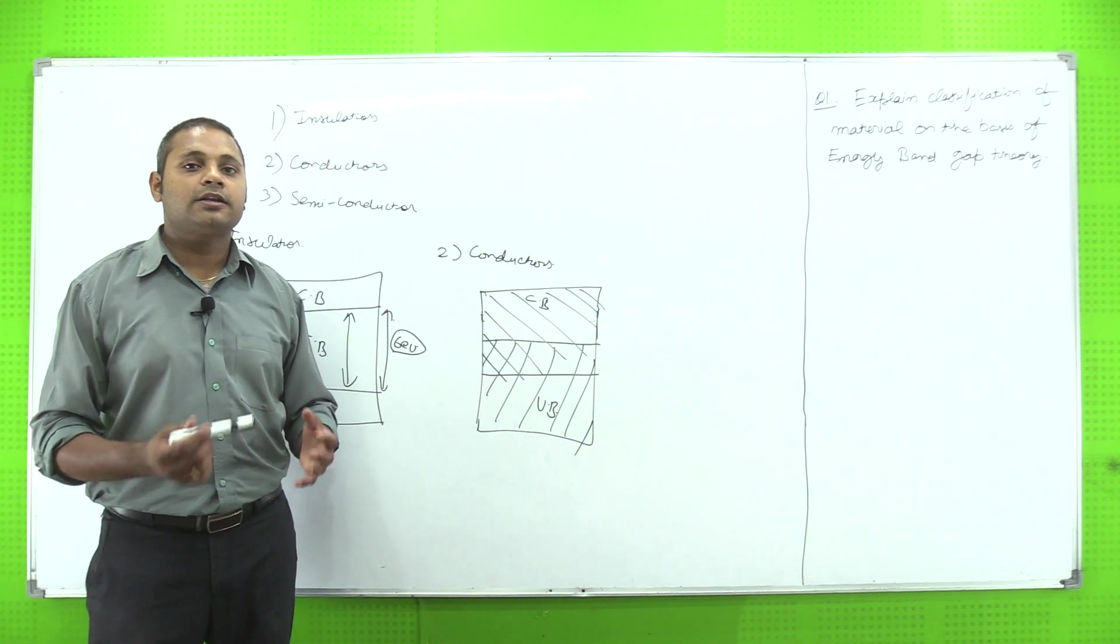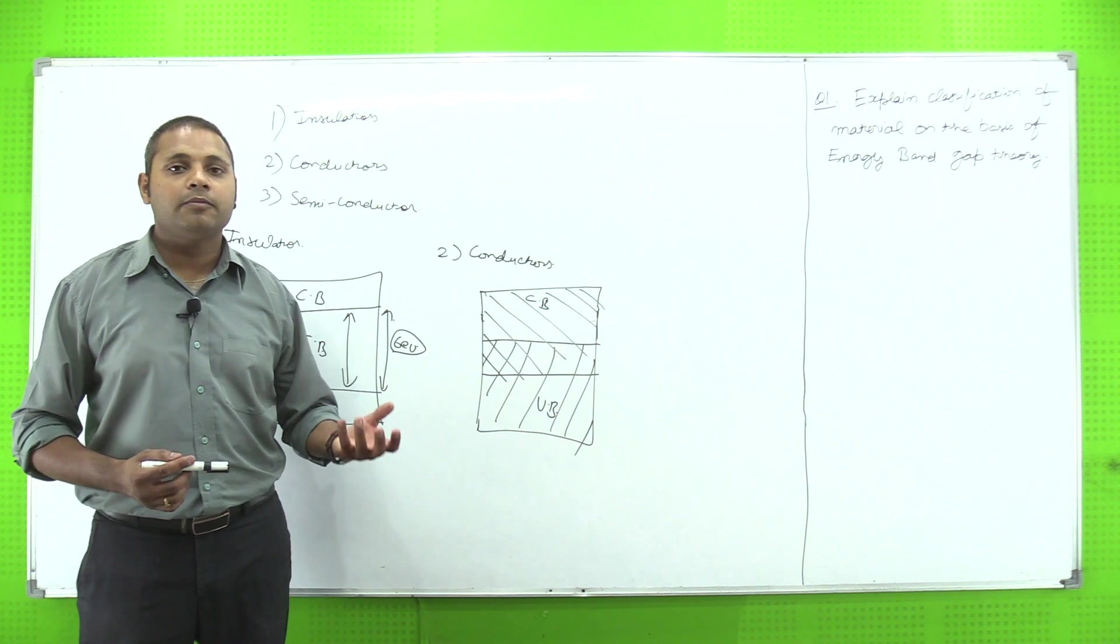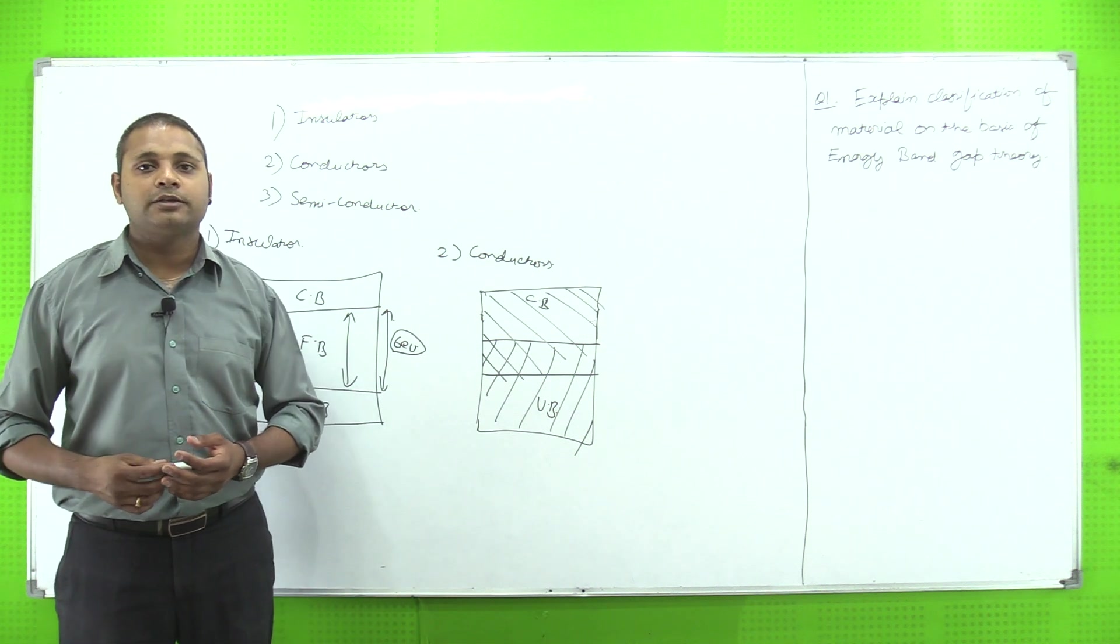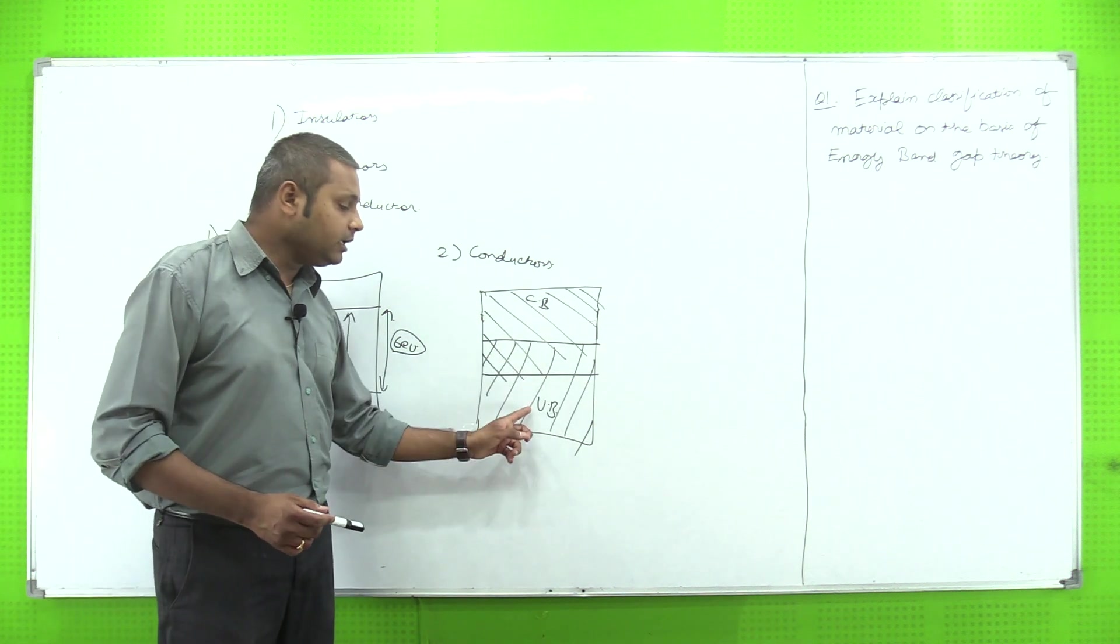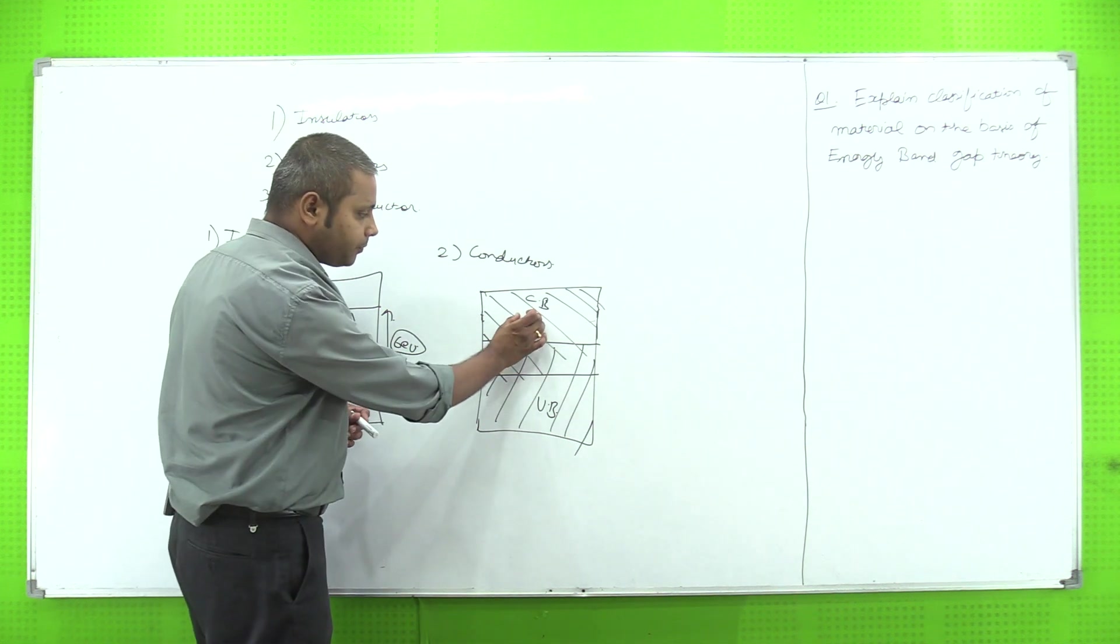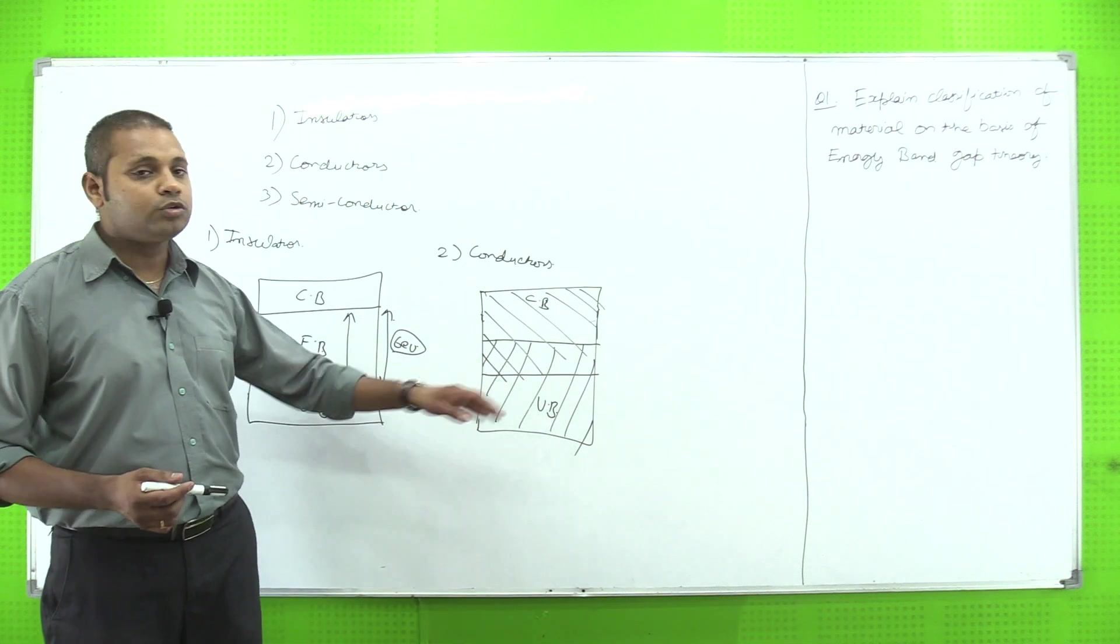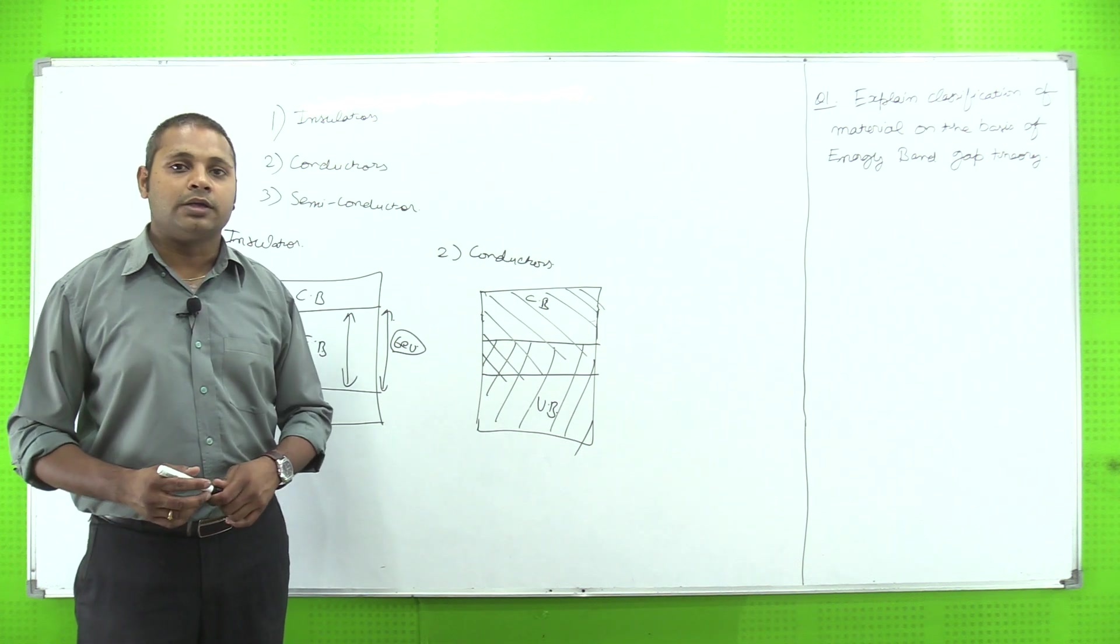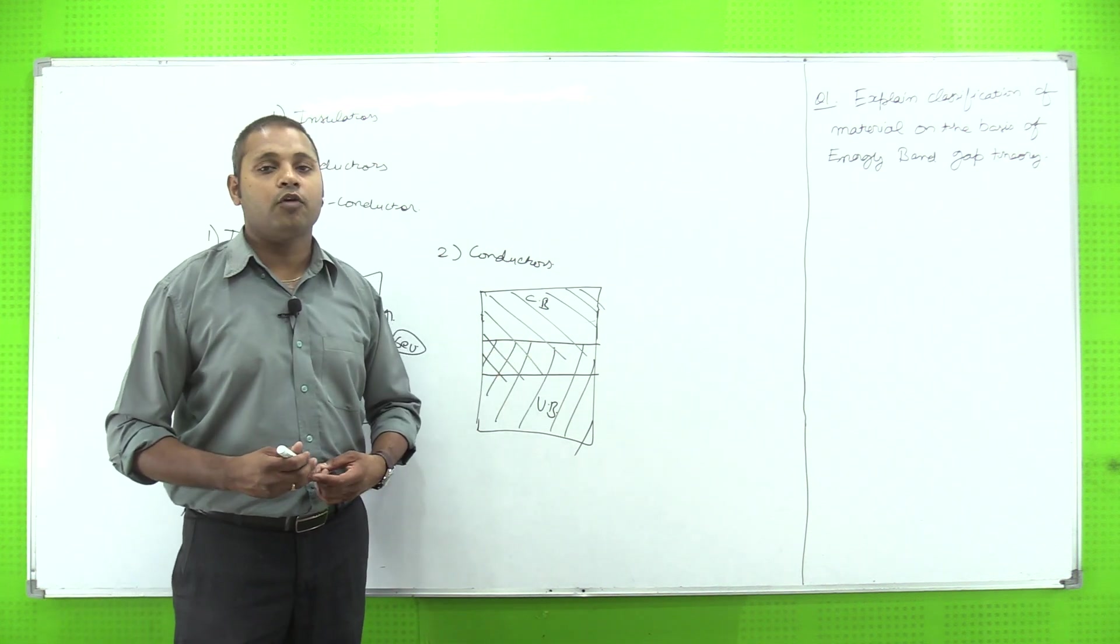Jo bhi hum wires use karenge, jo bhi hum aisa material use karenge, toh isme se heat aur electricity easily pass ho jayegi. The reason behind this is because there is no forbidden gap in the conductor. Conductor mein koi bhi forbidden gap nahi hota. Even conduction band and valence band are overlap. Yahaan par electron ko jump karne ki zarurat nahi padti, aur kisi bhi external energy ki requirement nahi hota. Bas hamari electron ko kya karna hota hai - we have to move in a particular direction that forms a current.